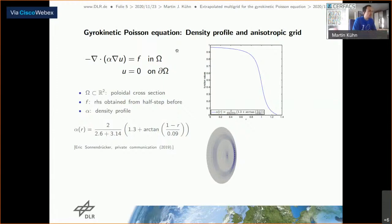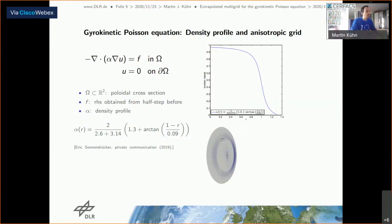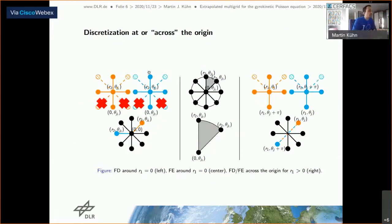We consider two kinds of discretizations — finite differences or finite elements on this mesh. The finite elements use a non-standard discretization due to the extrapolation used in later stages. A key question posed by the geometry is: what do we do with the origin? Since the origin is the node where the mapping is not one-to-one — there is one line with radius zero which is mapped to the origin.